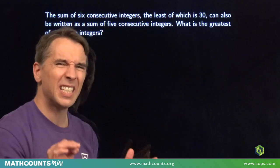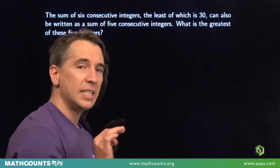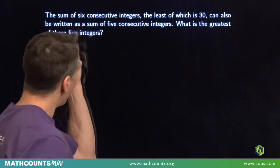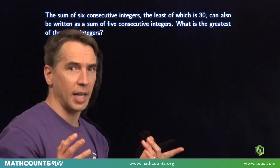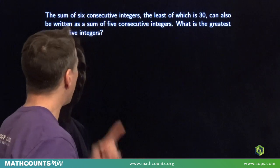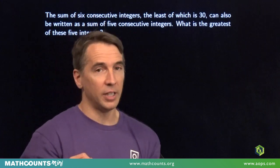All right, here we go. The sum of six consecutive integers, the least of which is 30, can also be written as a sum of five consecutive integers. We have to find the greatest of these five integers.